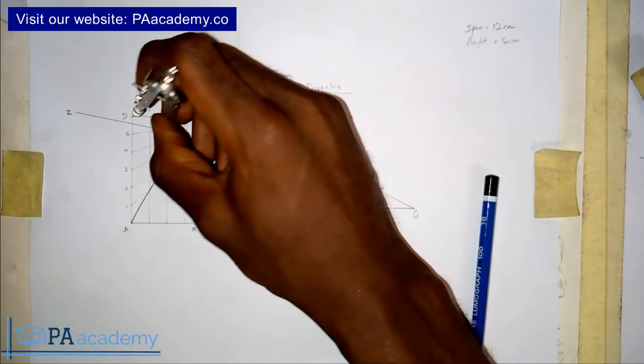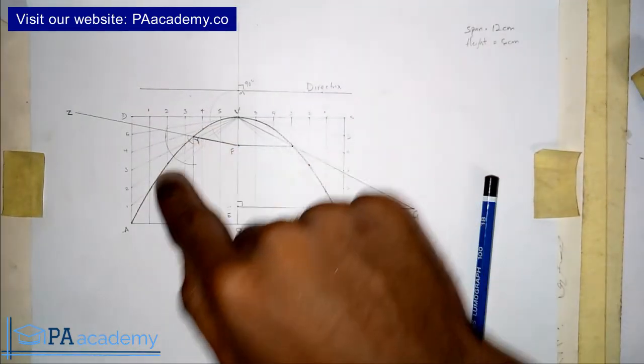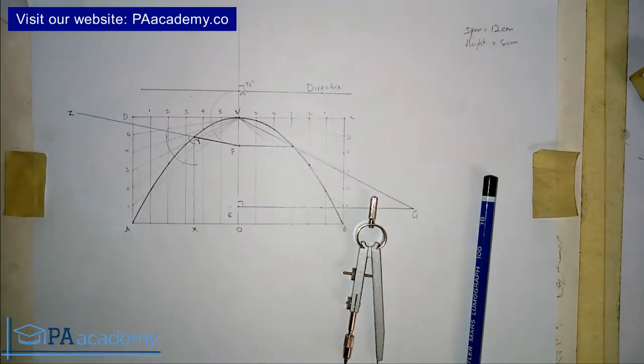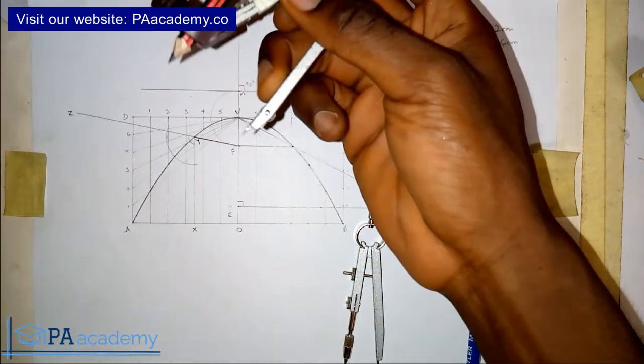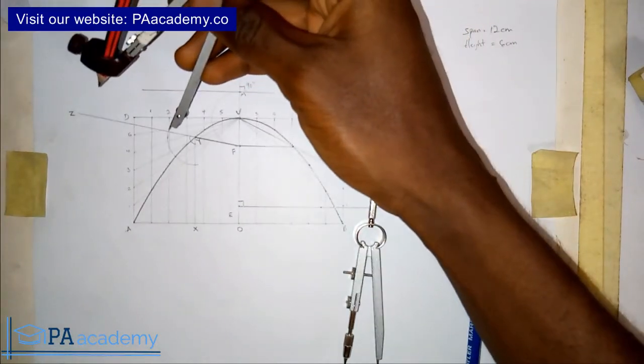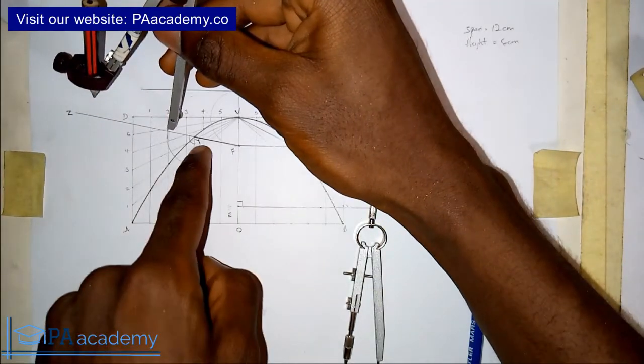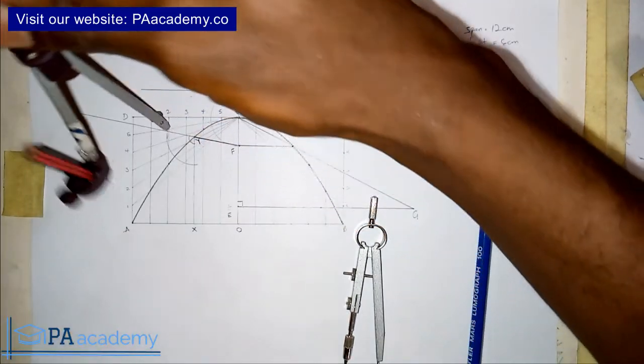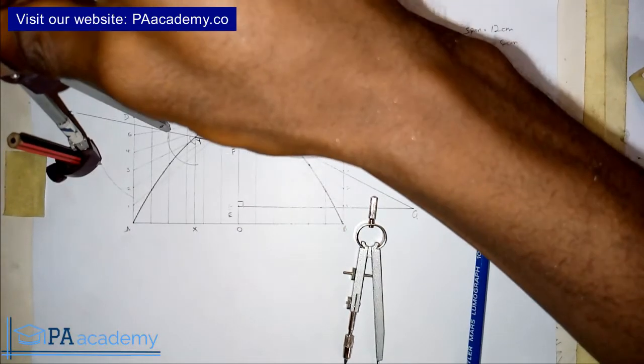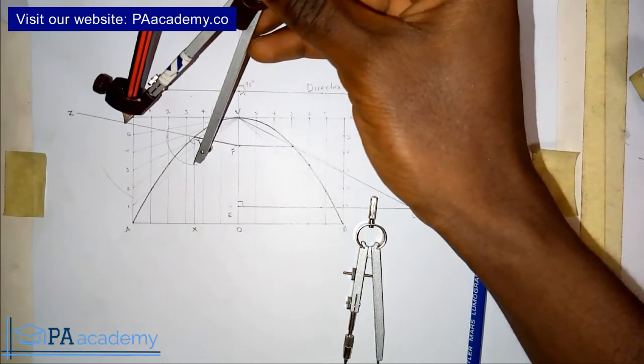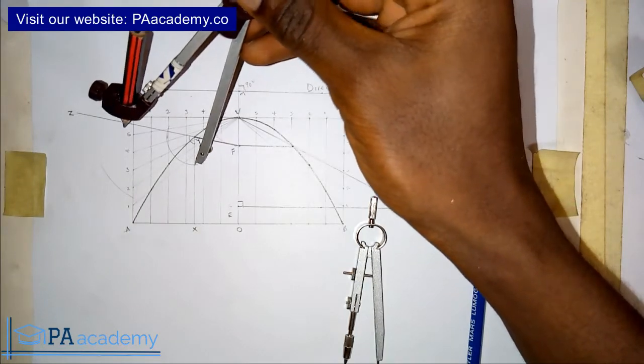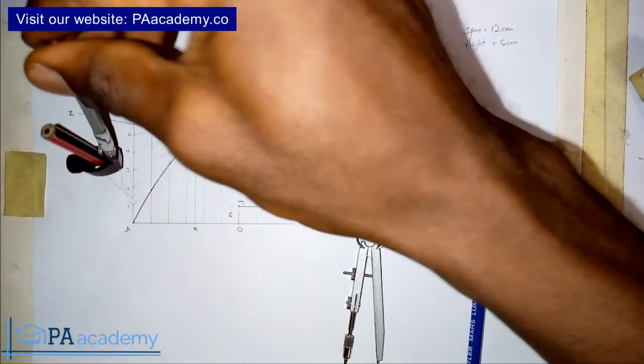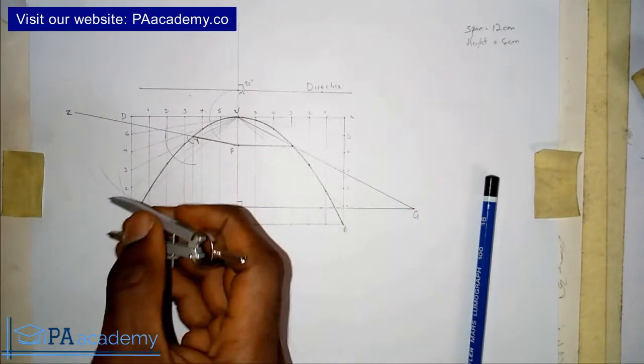But in doing that, once you draw this arc like this, to touch line XY and line YZ, you can then decide to increase it or use the same length. So you place it where it is touching this line YZ. You draw an arc. With the same length, you come to this point. You draw an arc. Now, the point of intersection, this is it.